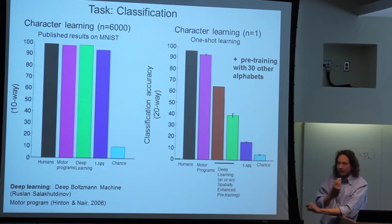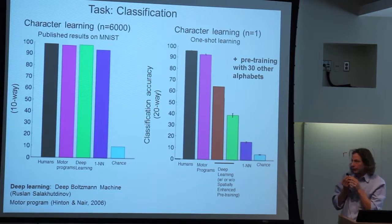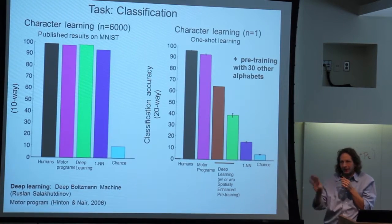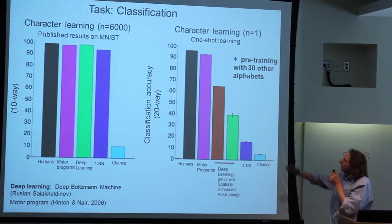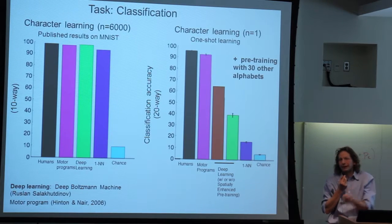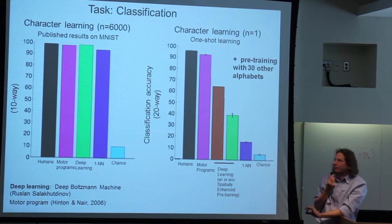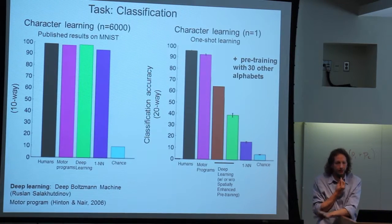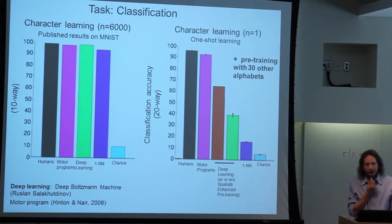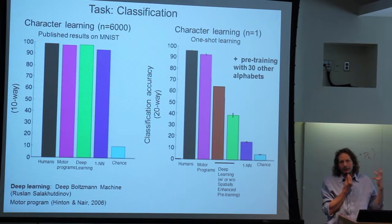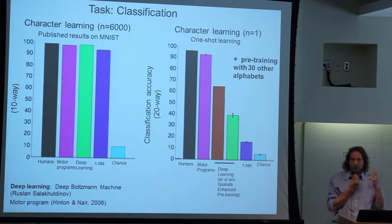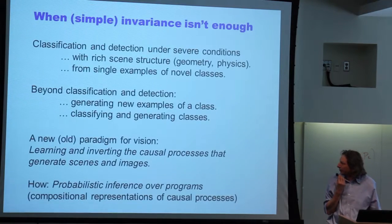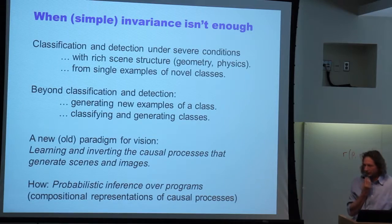Russ has helped keep our deep learning comparison honest — deep Boltzmann machines pre-trained on 30 alphabets, spatially enhanced for basic invariance to translation, scale, and rotation, can do about 70% correct. But there's a far cry between 70% and people's 95%. This compositional causal model with parts, sub-parts, and spatial relations can basically achieve human-level performance and even produce human-plausible errors. We hope to release this dataset soon and encourage others to work on it — tasks where we take the challenge of learning good representations at human-level performance seriously. Thank you.